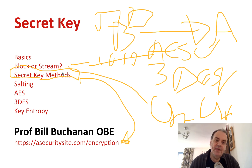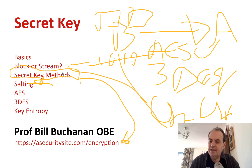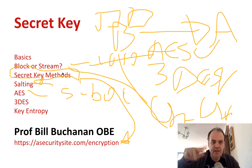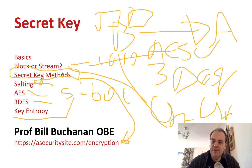One thing we'll find is that when we encrypt, we need to make sure the output is always changing even for the same input. We bring in a concept called salting, which ensures that every time we encrypt we get a different output even though the input is the same. We'll look at AES in more detail — the rounds it goes through, how it scrambles data using an S-box table, row and column operations, and how it can be reversed. We'll also look at DES and 3DES, and finally measure the true strength of our cryptography by examining key entropy.